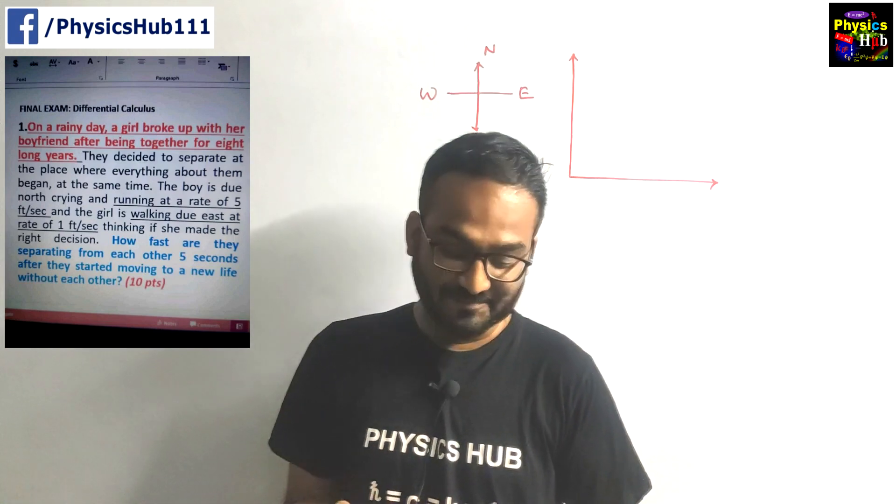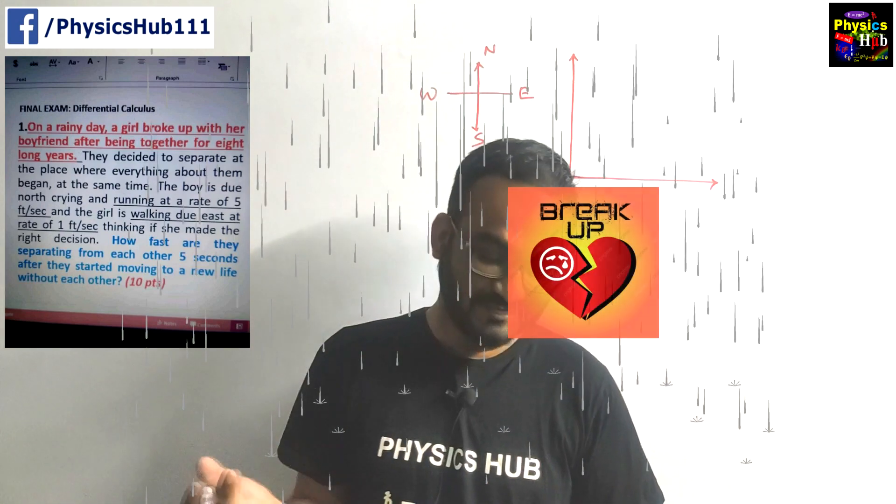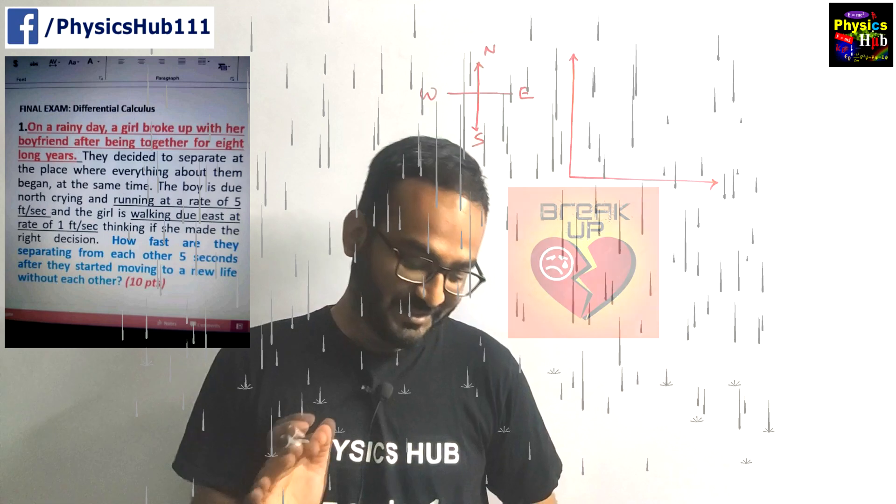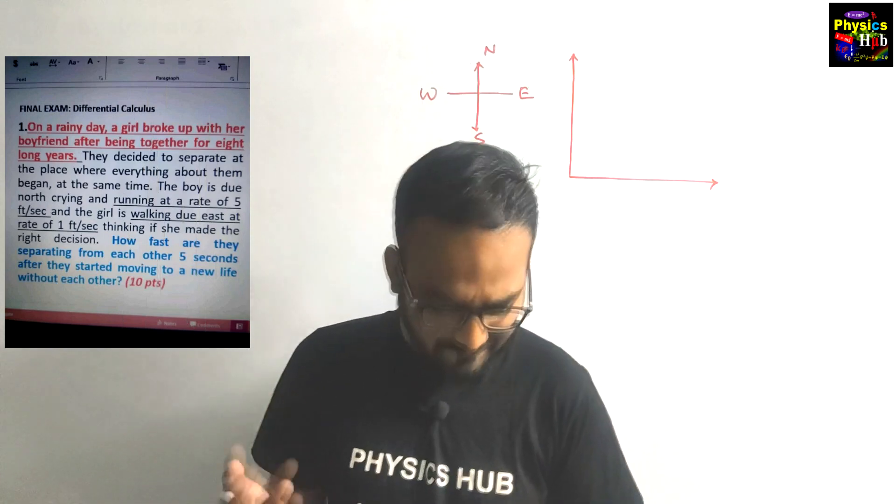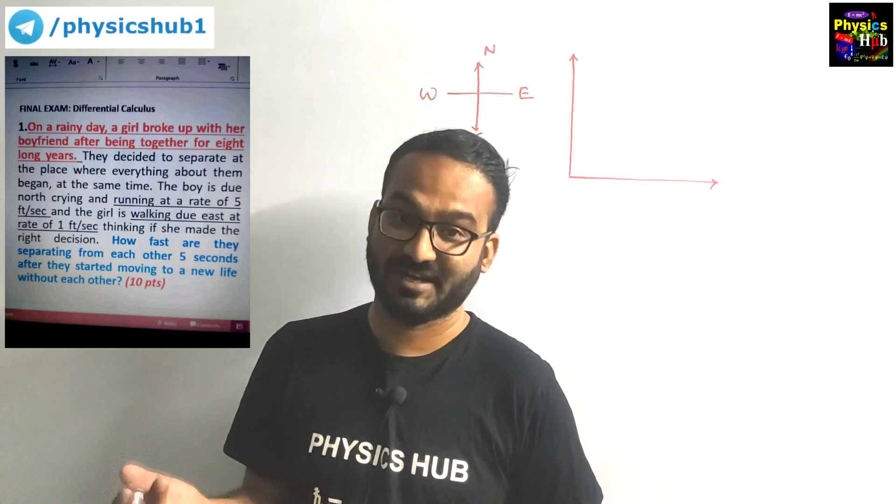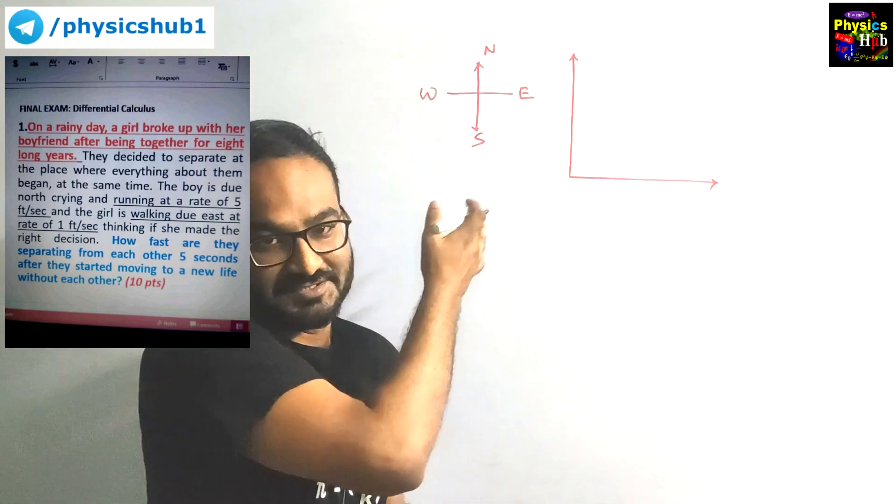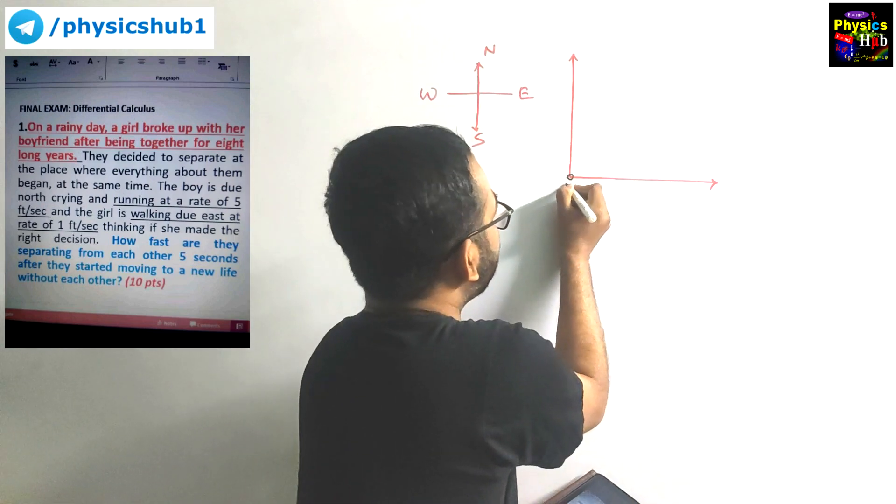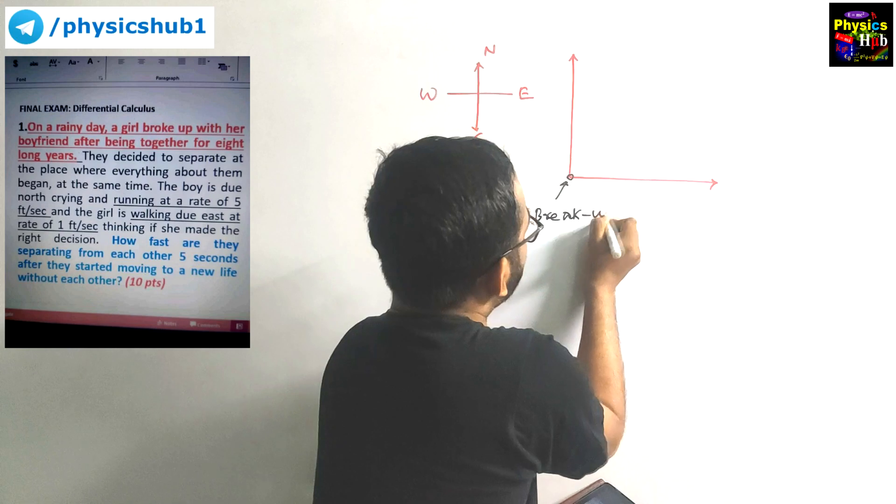So one rainy day a girl broke up with her boyfriend after being together for eight long years. They decided to separate at the place where everything about them began. Let's consider this is north, south, east, and west. This is the breakup spot.